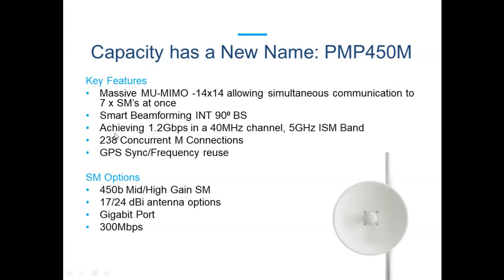Another major differentiator is that this radio can achieve 1.2 gigabits per second. Many may say that's on par with the ePMP 3000, which is also a fantastic flagship unit. But the key difference is that this radio achieves this on a very narrow 40 megahertz channel — half the channel width of a traditional AC radio. So rule of thumb: if you're working with 1.2 gigabits per second on a 40 megahertz channel and you need to slim that down to 20 megahertz in a noisy environment, you'll still be working with about 600 megabits per second. That is the key differentiator that no competitor can match on a specific unit.